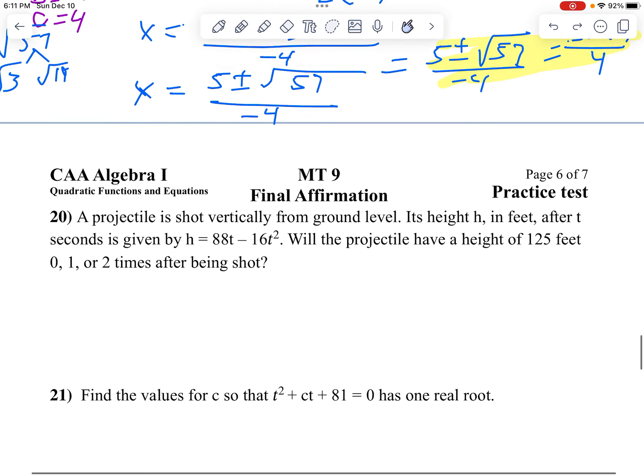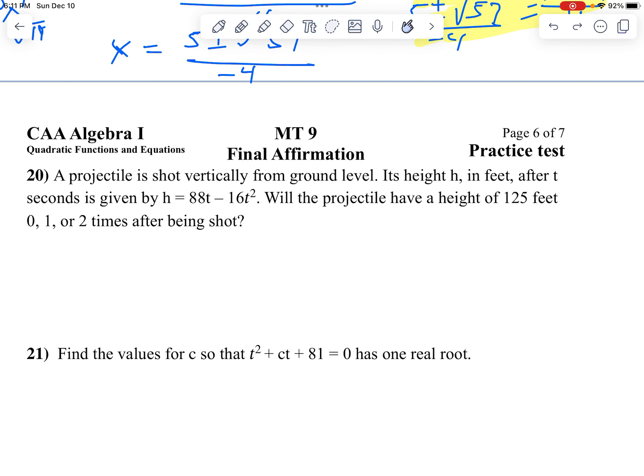On question 20, we have this projectile that's shot up in the air, and it's given by our formula. We want to know when will the projectile have a height of 125. We'll be at 0, 1, oh, we don't have to actually solve this. We can use the discriminant. But in order to use the discriminant, first we have to understand the height is 125.